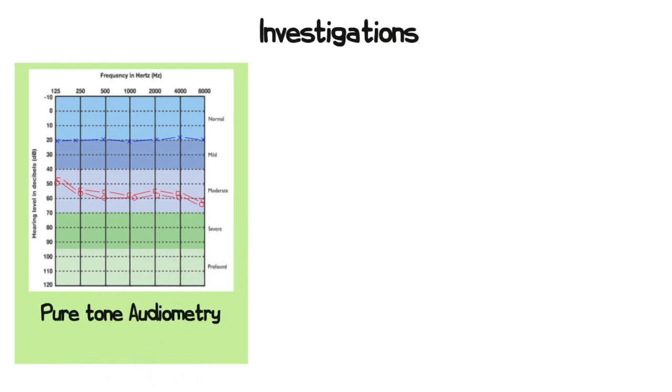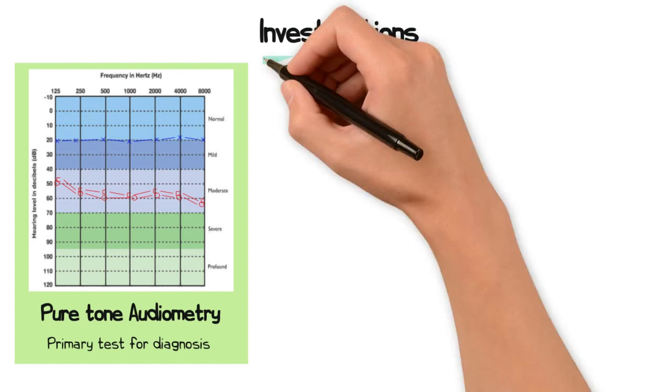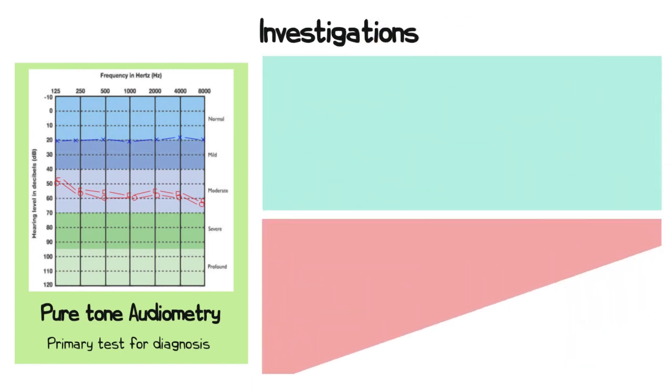While pure tone audiometry is the primary test to diagnose sudden sensory hearing loss, as it quantifies the degree and type of hearing loss, other investigations are useful to rule out other causes.